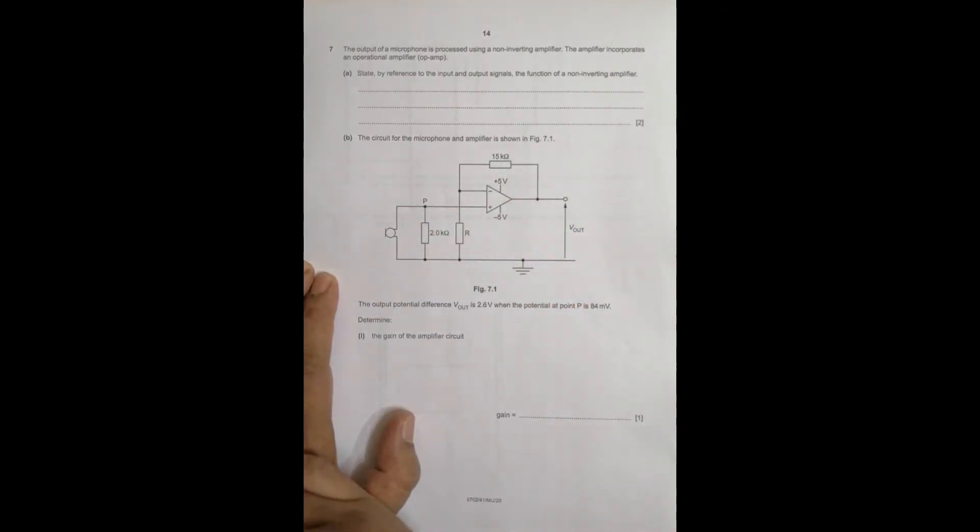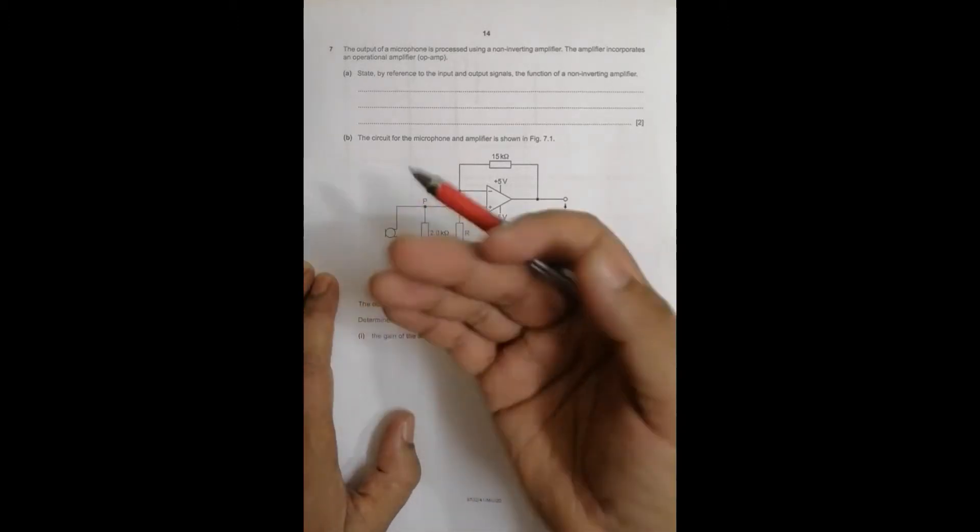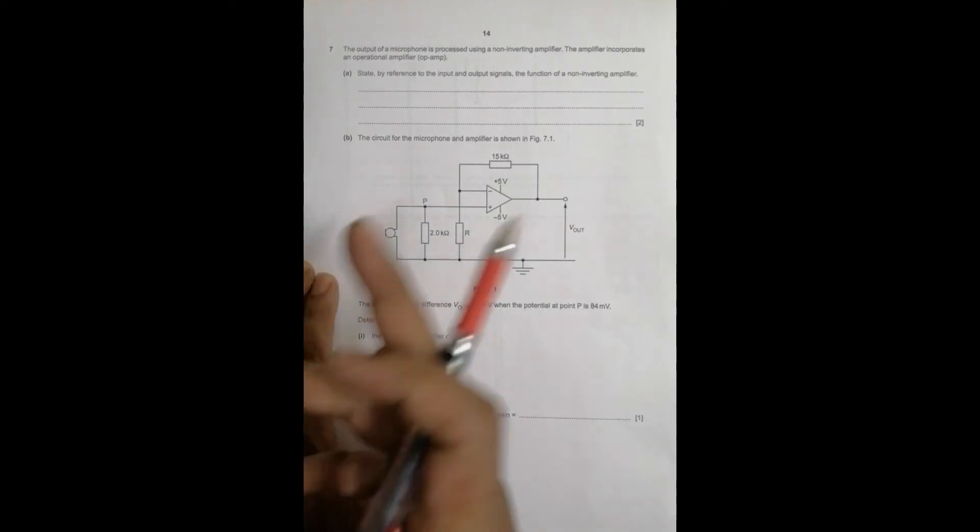The first thing of amplifier is to of course magnify signals, increase the output of the signal proportionally, which is equal to its gain. The proportionality constant is equal to its gain.